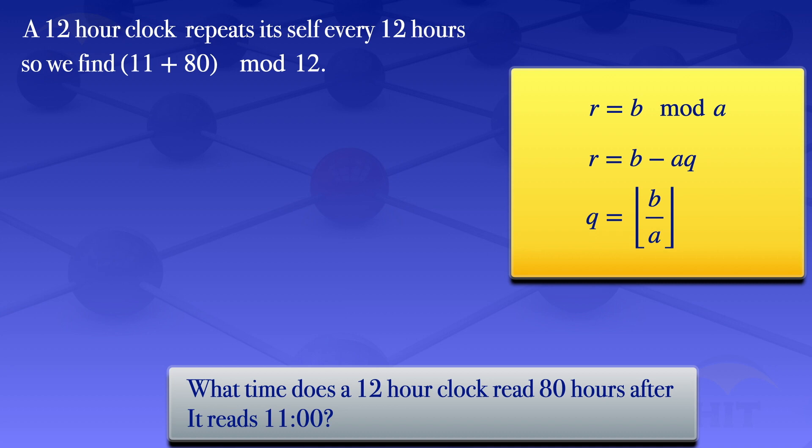We have (11 + 80) mod 12. 11 plus 80 gives us 91, so we have 91 mod 12.